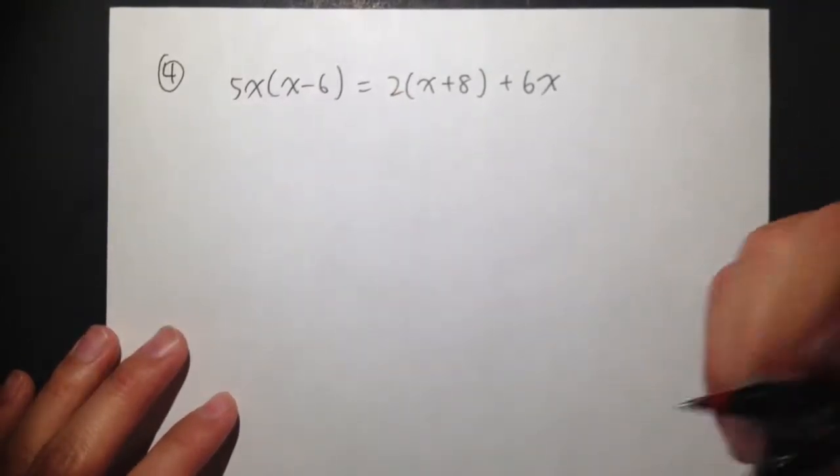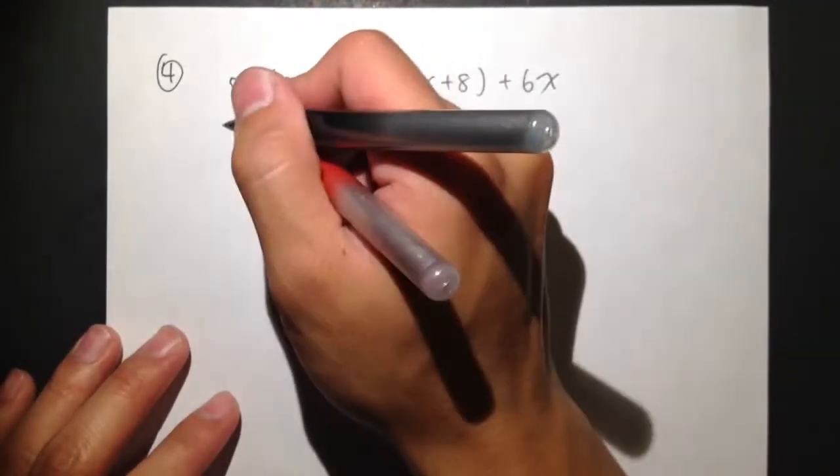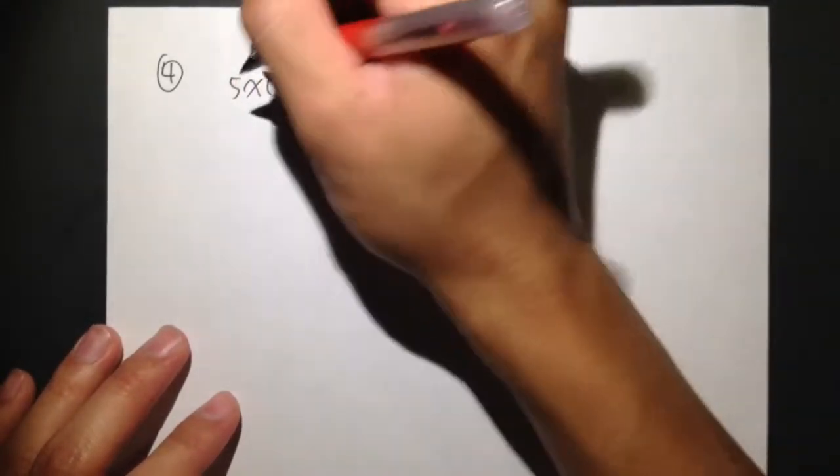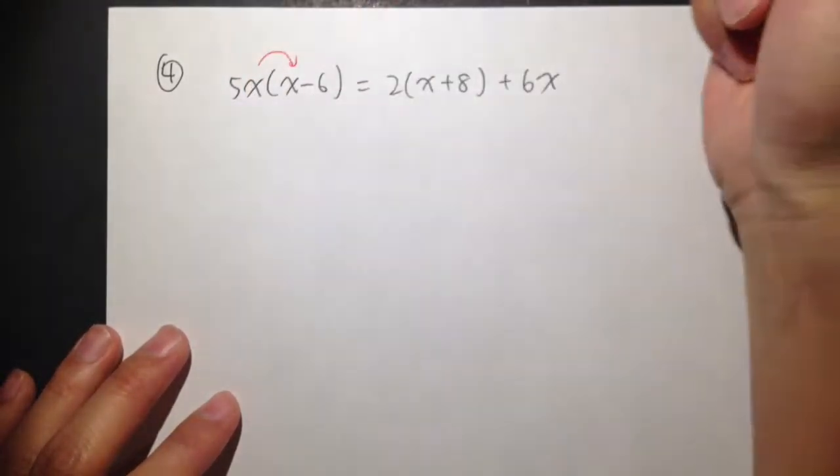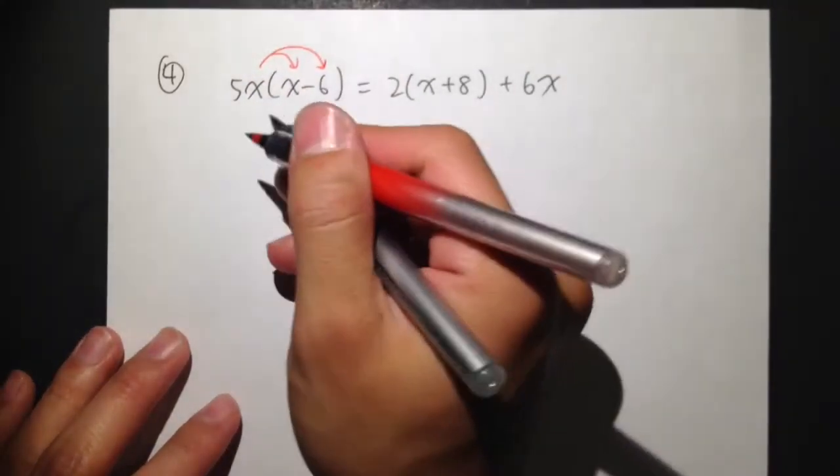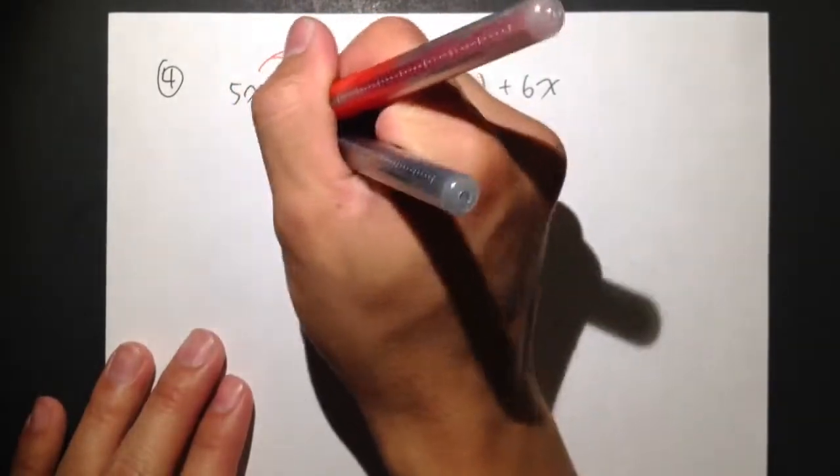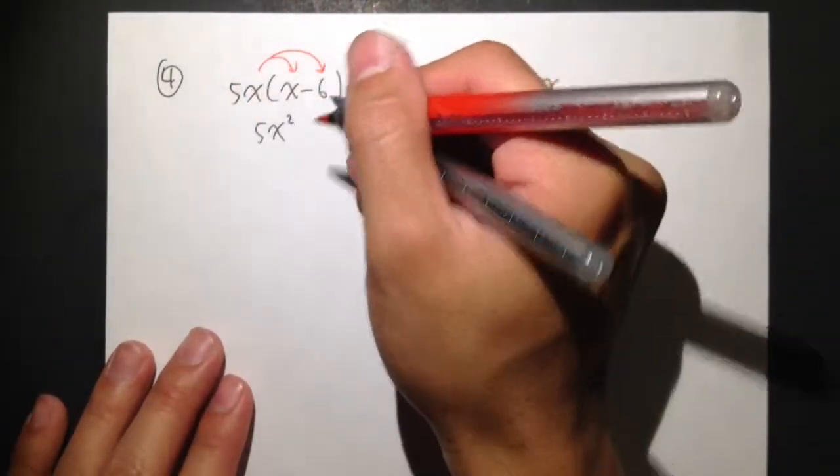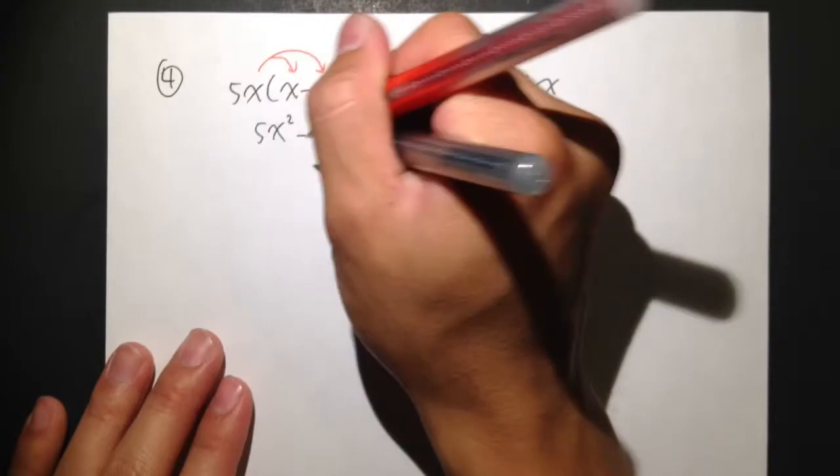So what we should do at first is just multiply the 5x inside of the parenthesis. I will distribute the 5x here, and then distribute the 5x with a negative 6. 5x times x, that gives us 5x squared. 5x times negative 6, that's negative 30x.